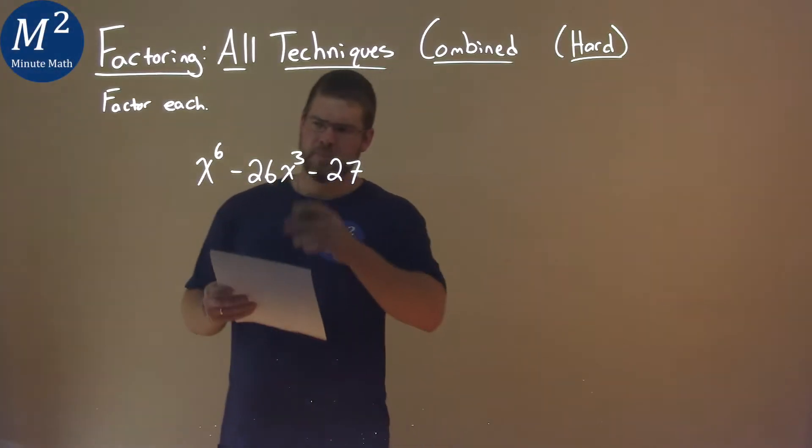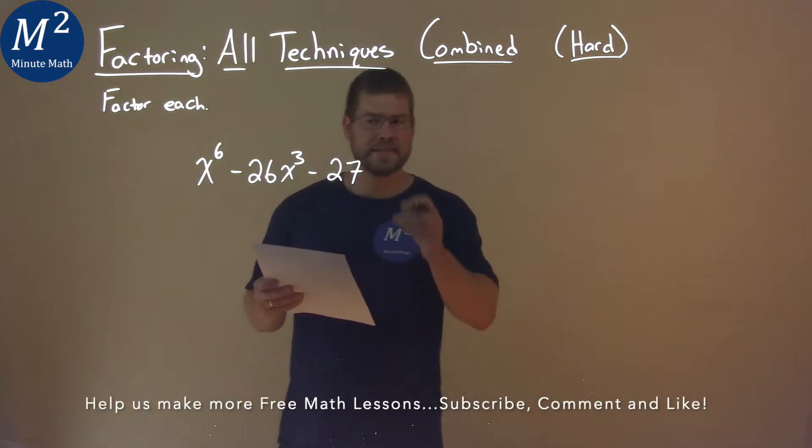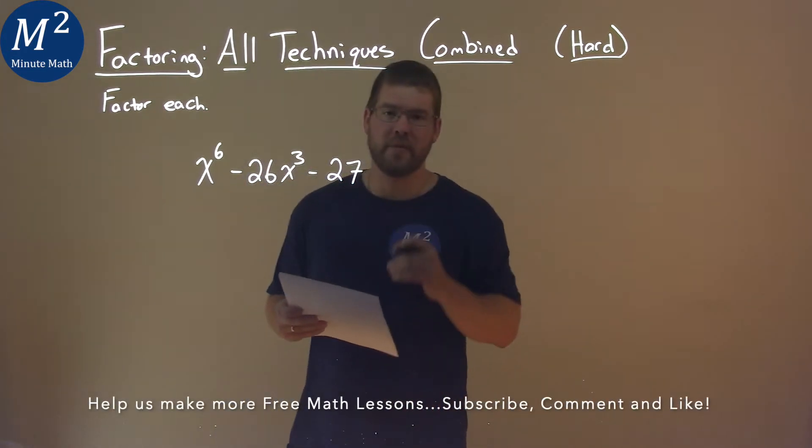We're given this problem right here: x to the sixth minus 26x to the third power minus 27, and we've got to factor this.